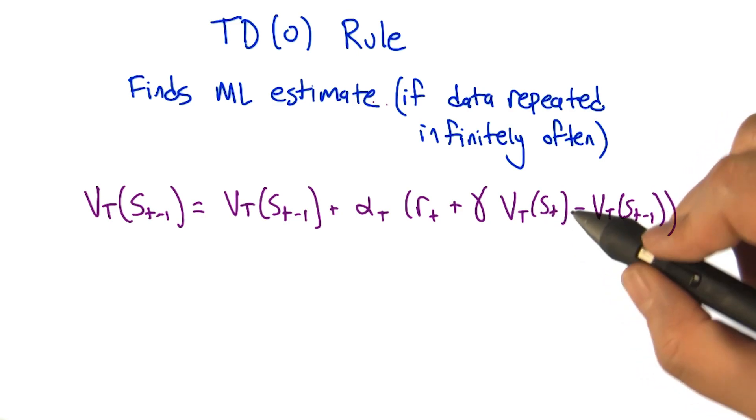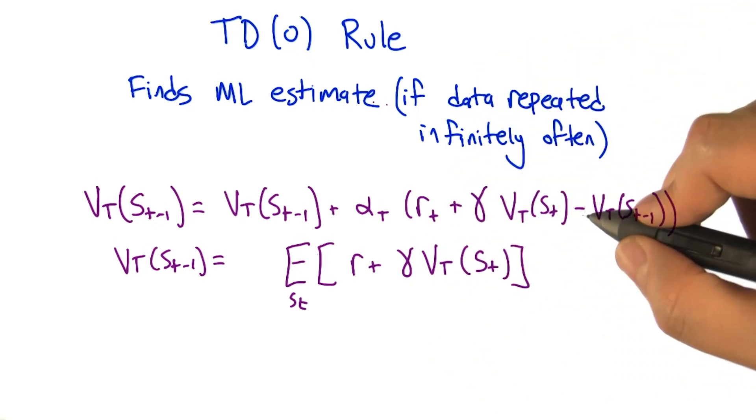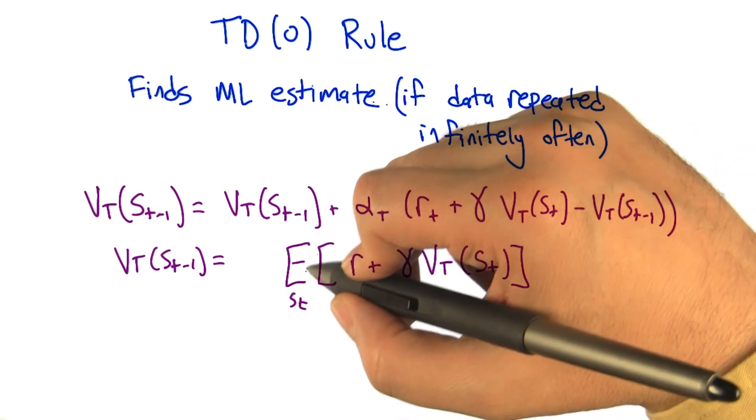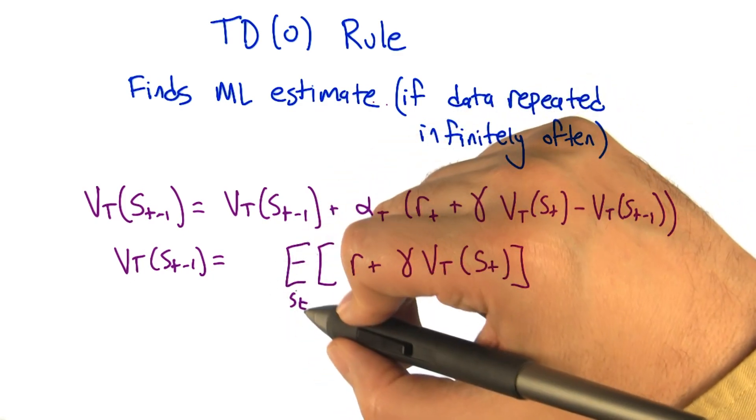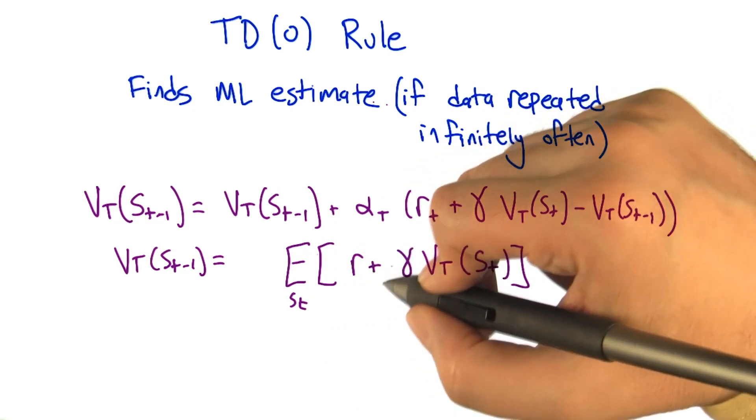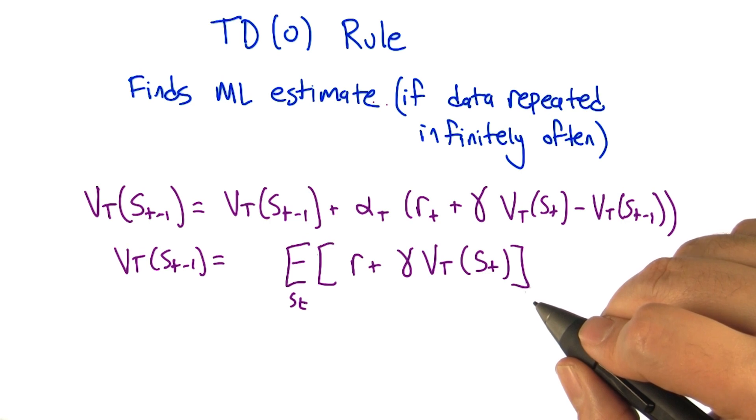And so really if we take the expectation of this, what is it going to look like? If we repeat this update over and over again, what we're really doing is sampling different possible s_t values. So really we're taking an expectation over what we get as the next state of the reward plus the discounted estimated value of that next state. Well, that seems right. That's kind of what we want.